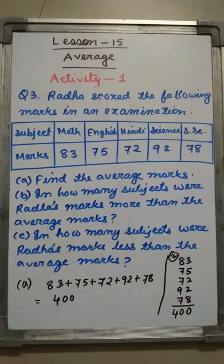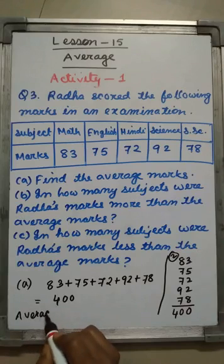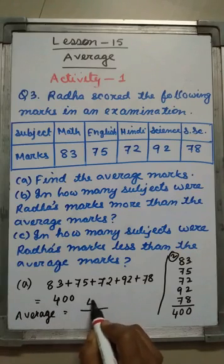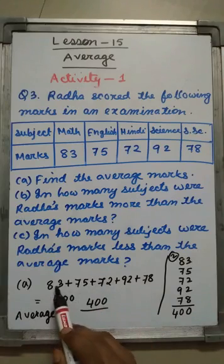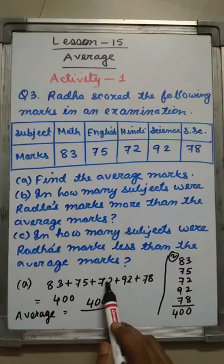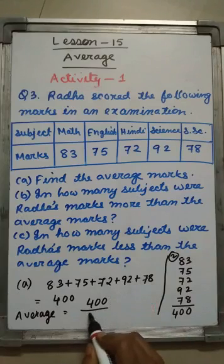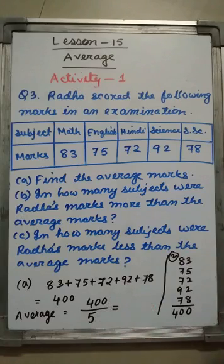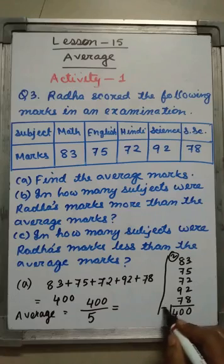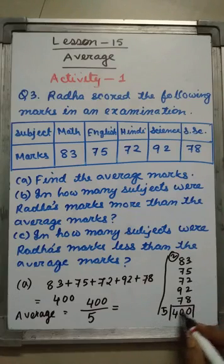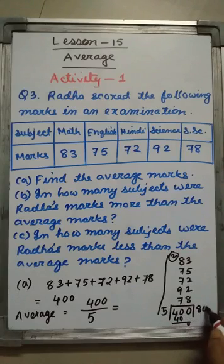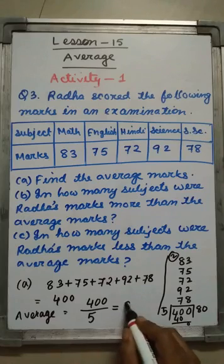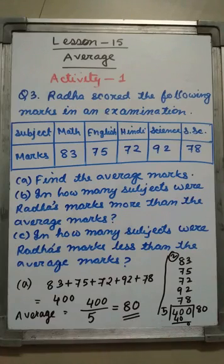So the average is total marks divided by how many subjects? 1, 2, 3, 4, 5 — so you have to divide by 5. If you divide 400 by 5, it is 8 times, 0 remaining. So 80 is her average mark.